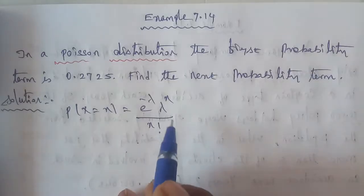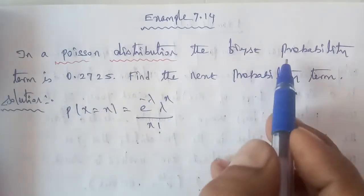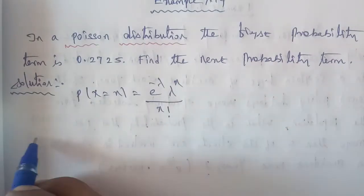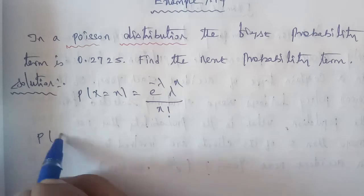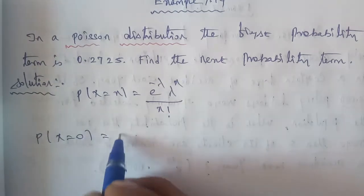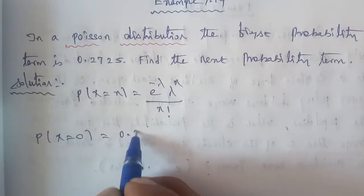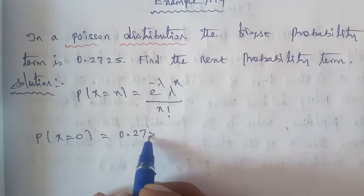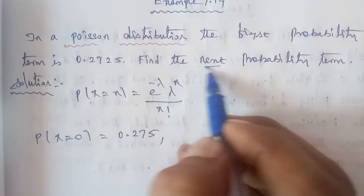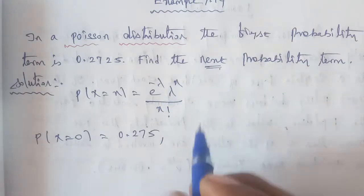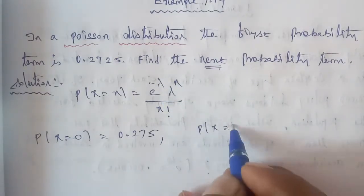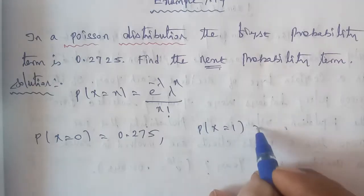In the given question, the first term probability is P of x equal to 0, which equals 0.2725. We need to find the next probability term, that is P of x equal to 1.